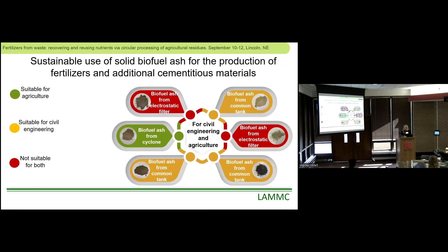Our second work, done in collaboration with Kaunas University of Technology and funded by governmental funds, had the task of identifying which biofuel ash is best for agriculture and civil engineering. We collected samples from different combustion plants and locations — biofuel ash from electrostatic filters, from cyclones, and from a common tank where these were mixed together. After analyzing chemical composition, we found that only biofuel ashes from the cyclone can be suitable for agriculture to make fertilizer products because they do not exceed maximum allowable limits of heavy metals. Ashes from the common tank had the highest nutrient content, but in some cases the heavy metal concentration exceeded maximum allowable limits.